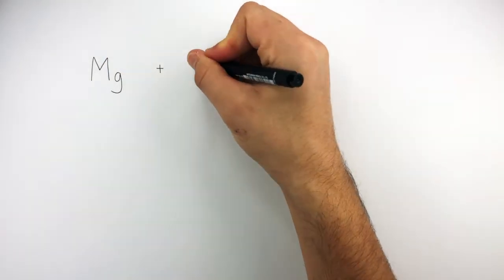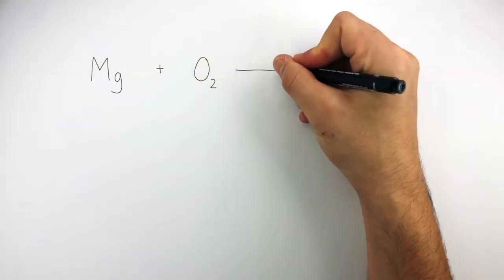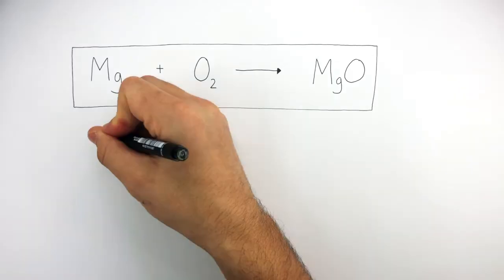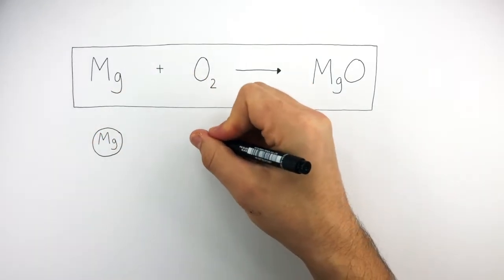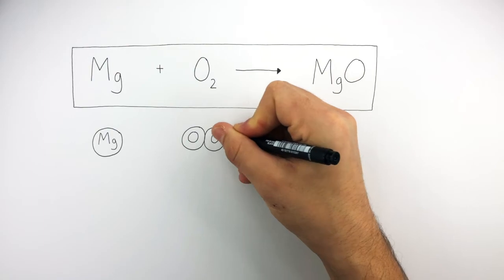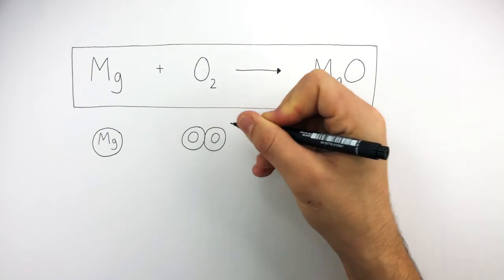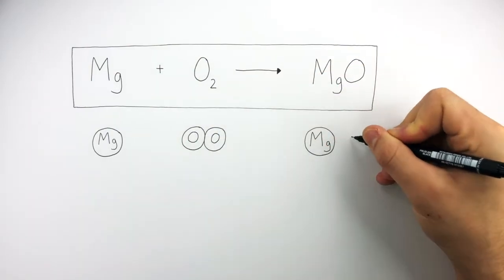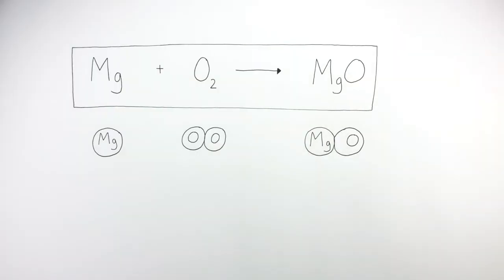Mg plus O₂ reacting to form MgO is the next symbol equation we're going to balance. The symbol equation tells us there is one magnesium atom, one oxygen molecule consisting of two oxygen atoms, and one magnesium oxide compound consisting of one magnesium atom and one oxygen atom.